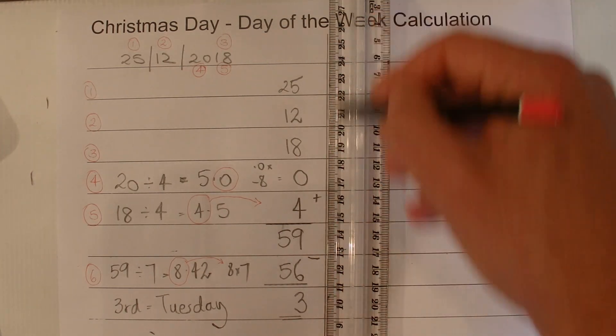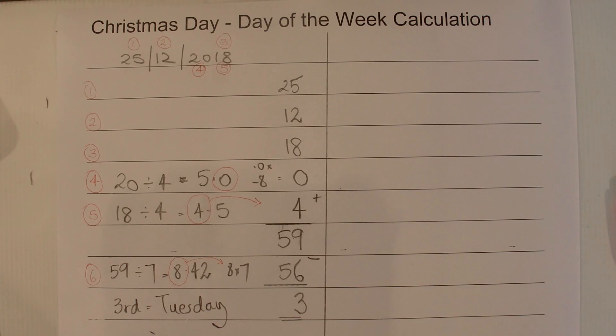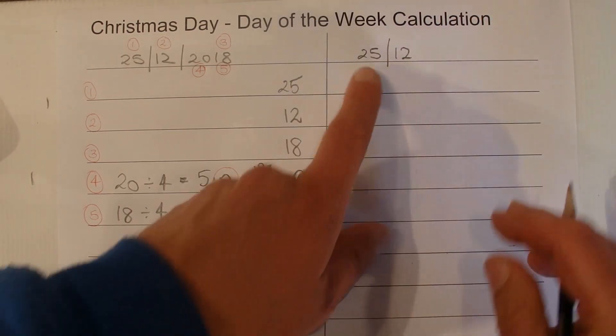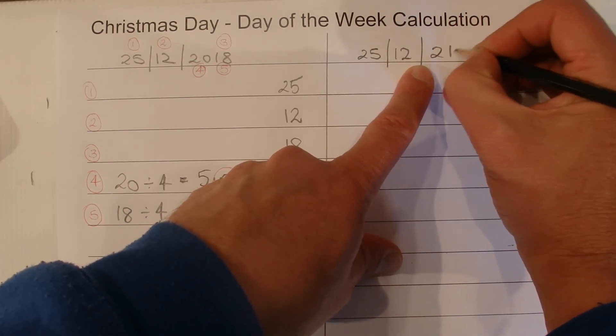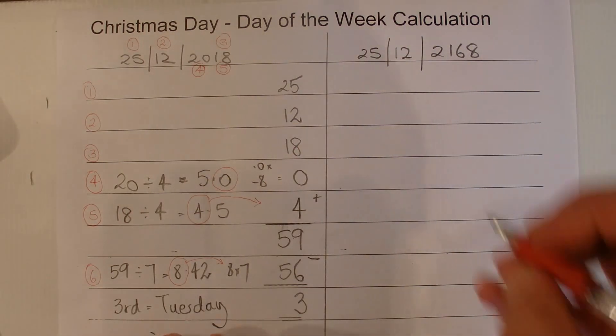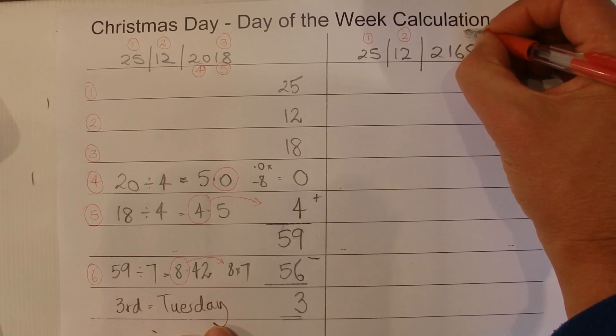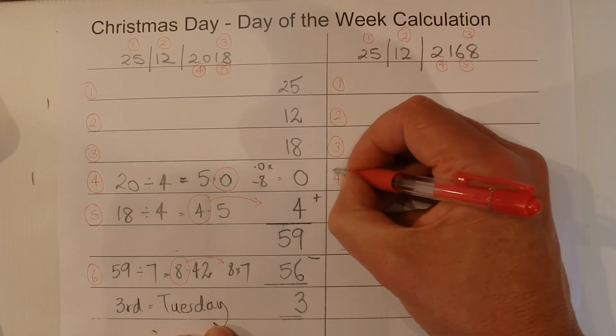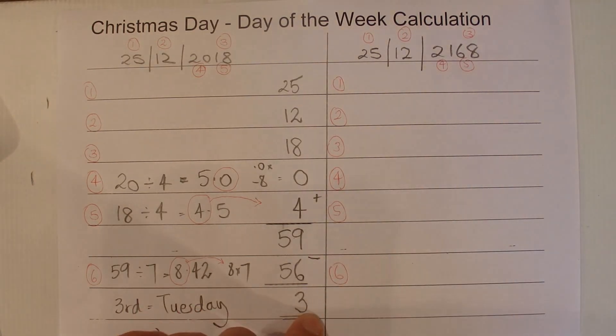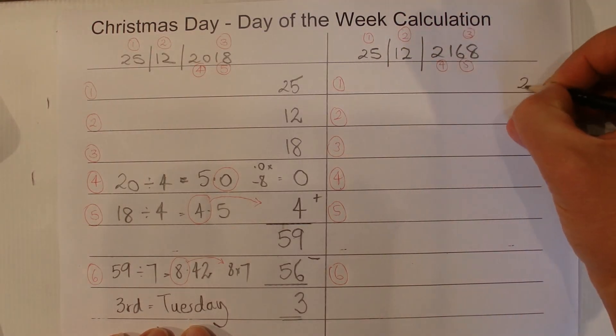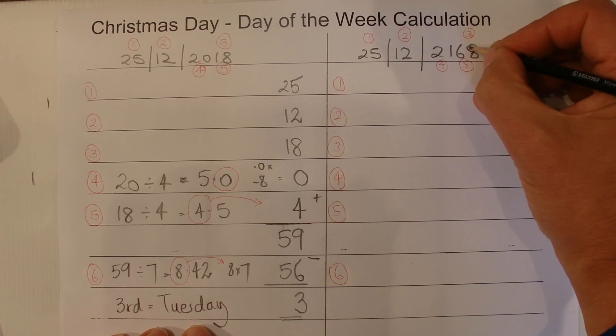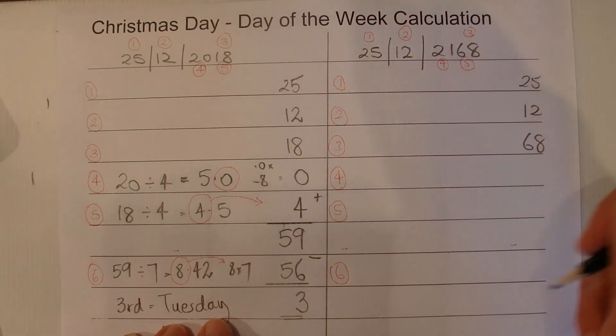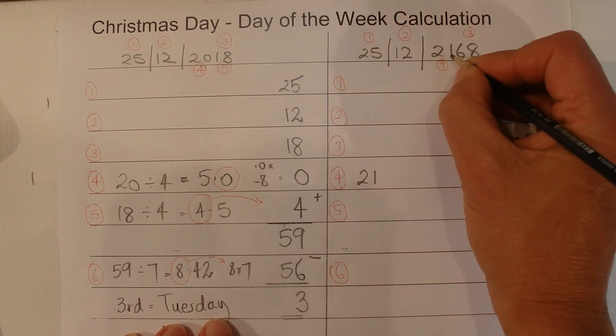And what I'll do now is I'll do the calculation again, but using a different year. So you can see how it works with a different year. So this time I'm going to jump forward 150 years. And I'm going to do the 25th of December 2168. So there we go, pick up our 5 parts. 1, 2, 3, 4, and 5. And then I'll write down here, 1, 2, 3, 4, and 5. And I'll put 6 in there as well, just so we're ready for it. And once again we pick up the 25 and the 12. And this time for 3, the year is 68. So we pick up 68 over here in our sum.